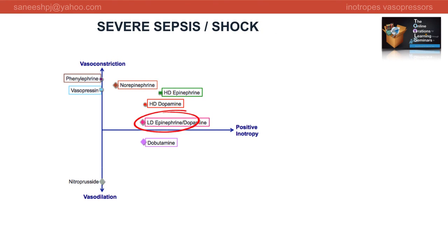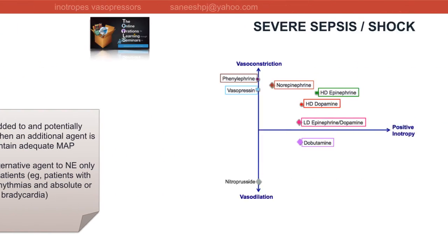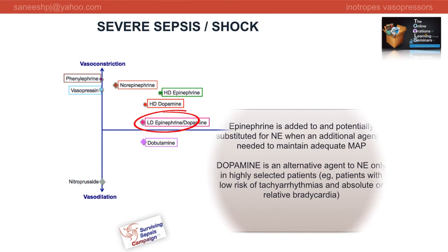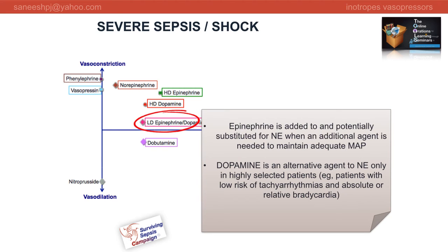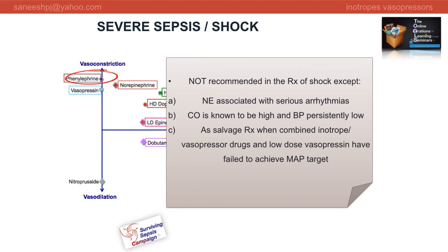How about epinephrine? It is usually added to — and potentially substituted for — norepinephrine when an additional agent is needed to maintain adequate mean arterial pressure. Dopamine is used as an alternative to norepinephrine only in highly selected patients, such as those with low risk of tachyarrhythmias and absolute or relative bradycardia. The Surviving Sepsis Campaign does not recommend phenylephrine except when: norepinephrine is associated with serious arrhythmias; cardiac output is known to be high and blood pressure persistently low; or as salvage treatment when combined inotrope-vasopressor drugs and low-dose vasopressin have failed to achieve mean arterial pressure target.